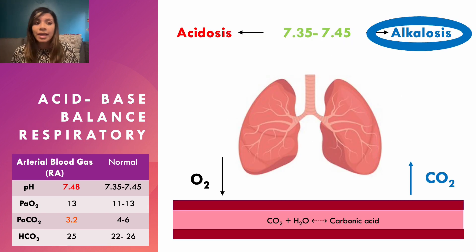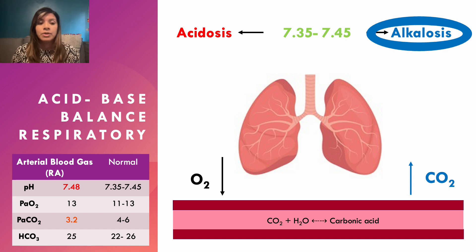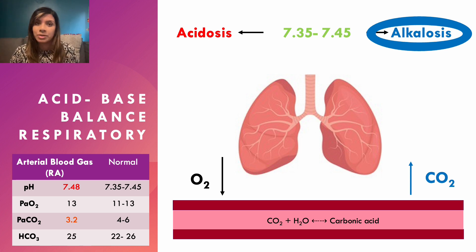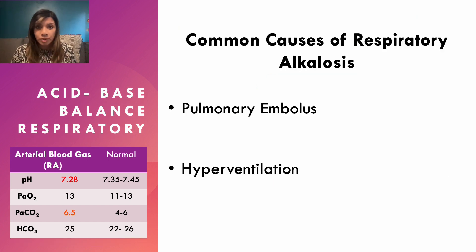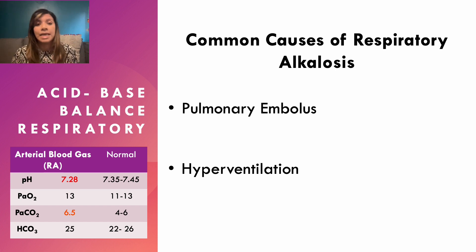At the opposite end of the spectrum, a respiratory alkalosis occurs when you're breathing too fast and getting rid of CO2 too quickly, leaving less carbonic acid in the blood, making it more alkaline. The pH rises and the CO2 moves in the opposite direction — it goes down. Common causes include hyperventilation during an anxiety attack, and also pulmonary embolism, where the patient breathes too fast and blows off CO2.